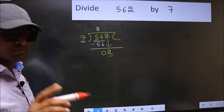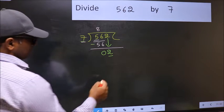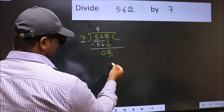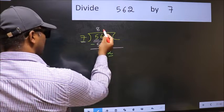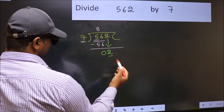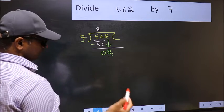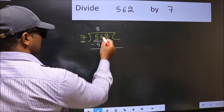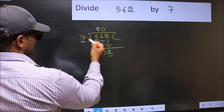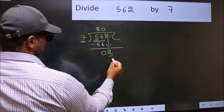Instead, what you should think of doing is, what number should we take here? If I write 1, I will get 7. But 7 is larger than 2. So what we should do is, we should take 0. So 7 into 0, 0.